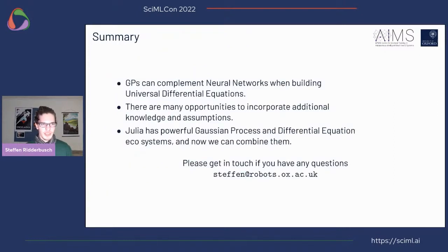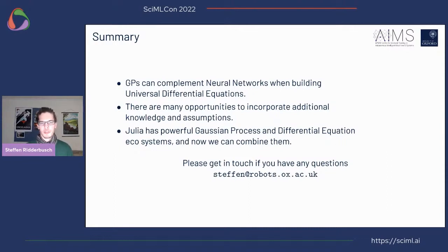In summary, GPs can complement neural networks when building universal differential equations, and I hope that at some point they can be used simply and interchangeably. There are many opportunities to incorporate additional knowledge and assumptions in GPs that are very difficult to incorporate in neural networks. Julia really is the perfect language to do this in, because there's already an extensive Gaussian processes ecosystem and SciML, and it would be very nice to combine all of them.